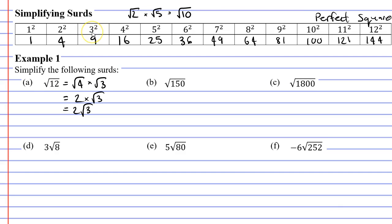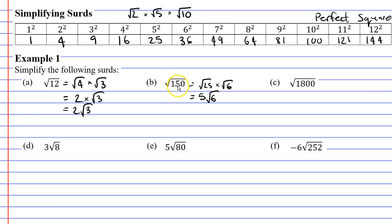So we write the square root of 25 times the square root of 6, which is equivalent to the square root of 150. The square root of 25 is the whole number 5, and we also have the square root of 6, giving us 5 root 6. We've simplified by reducing the large number 150 under the radical down to 6.